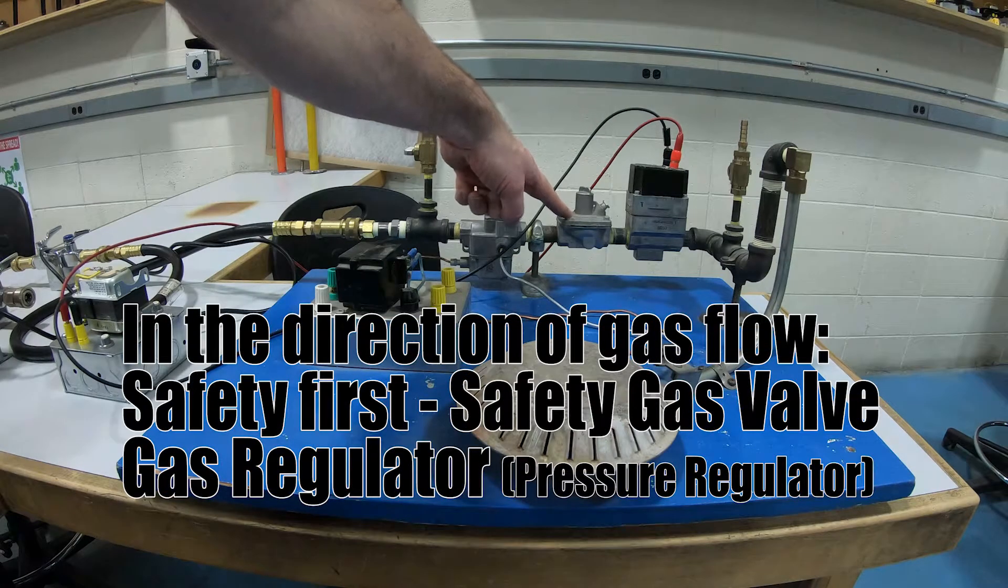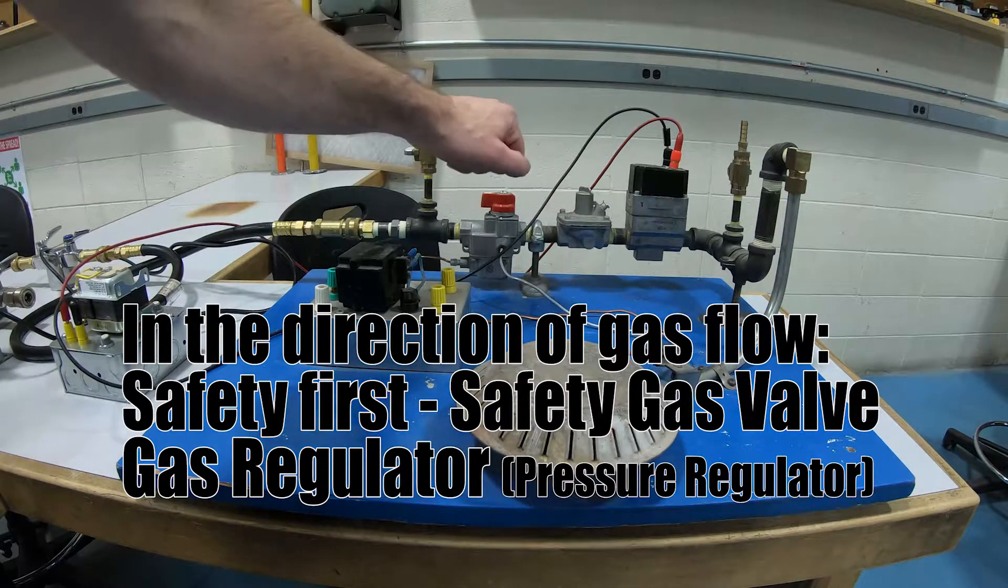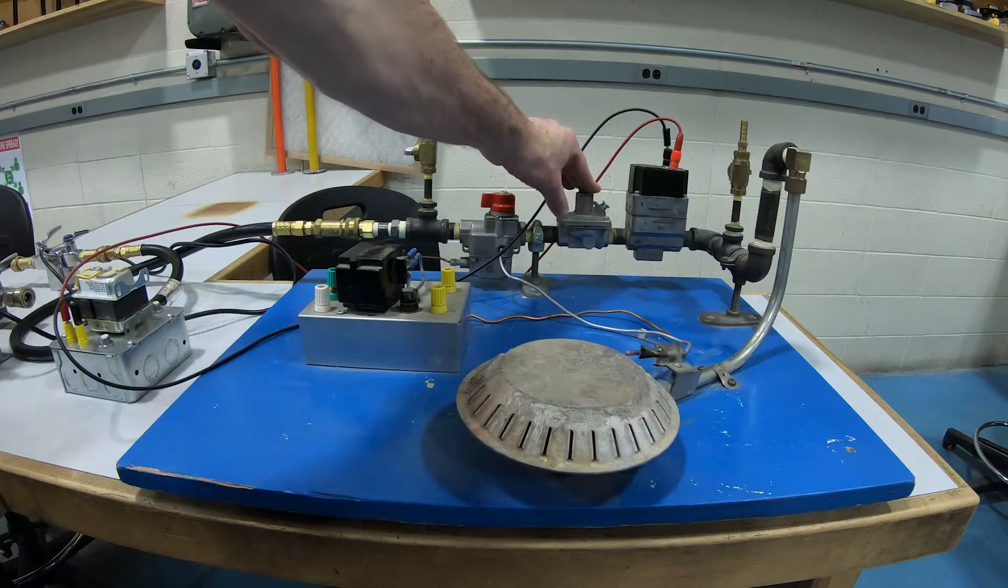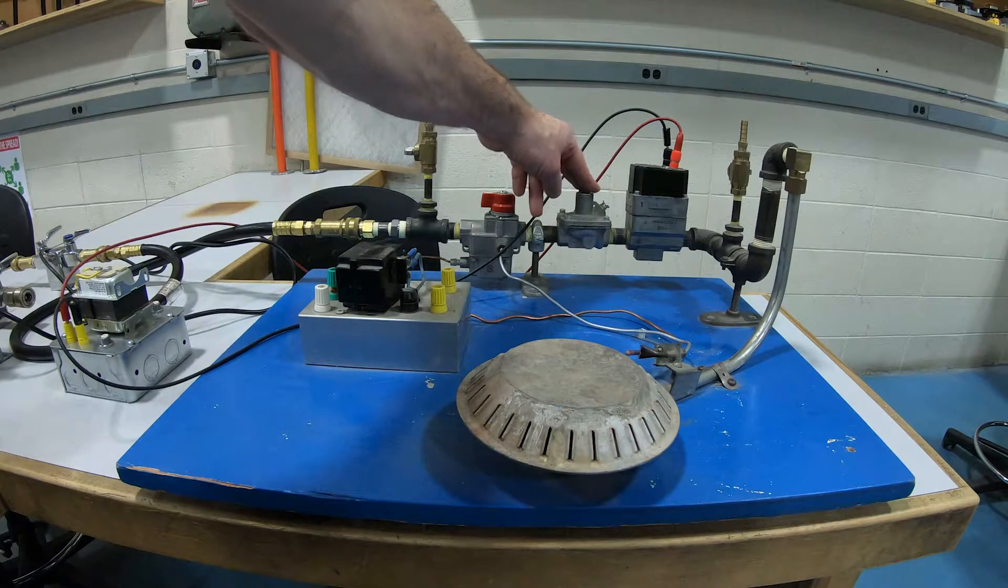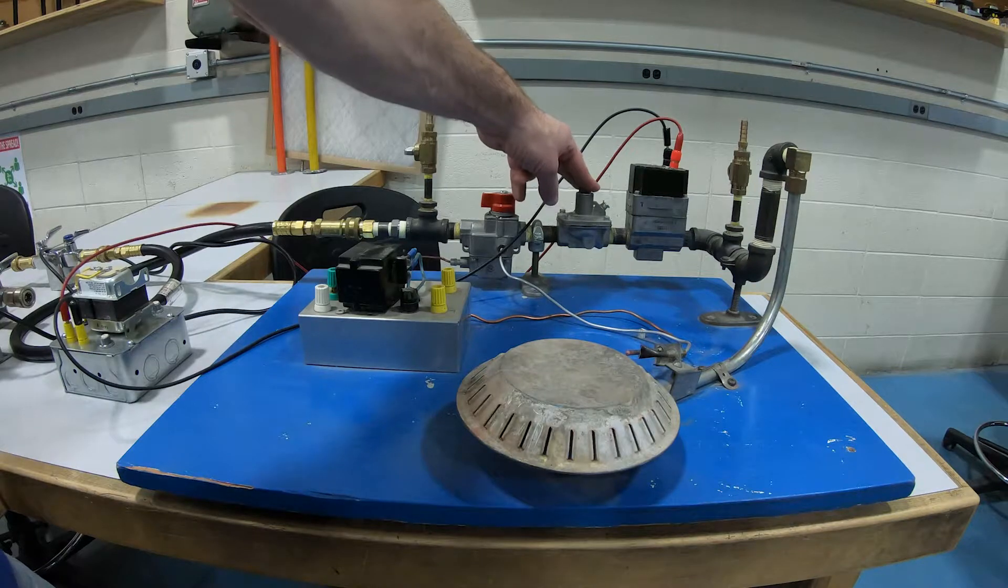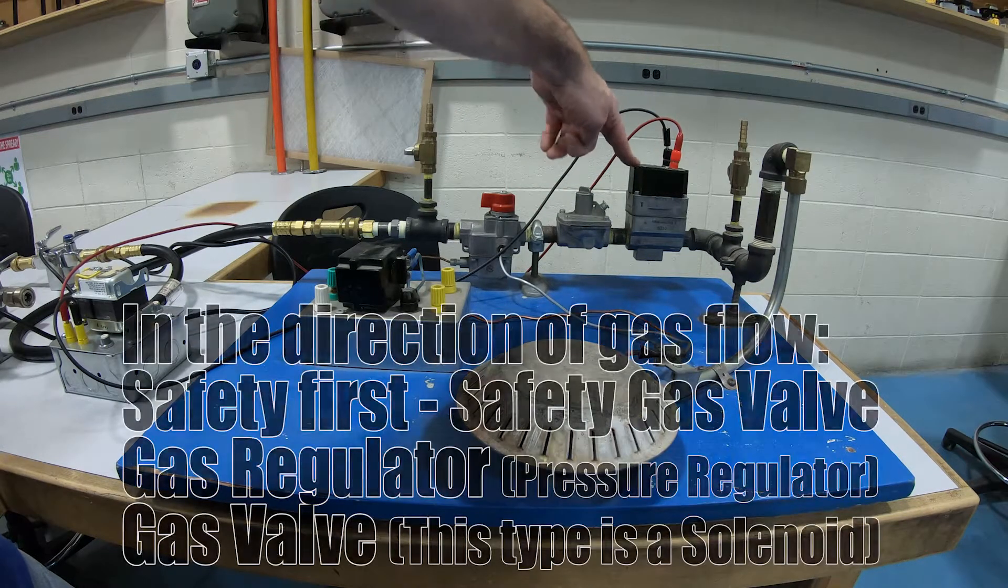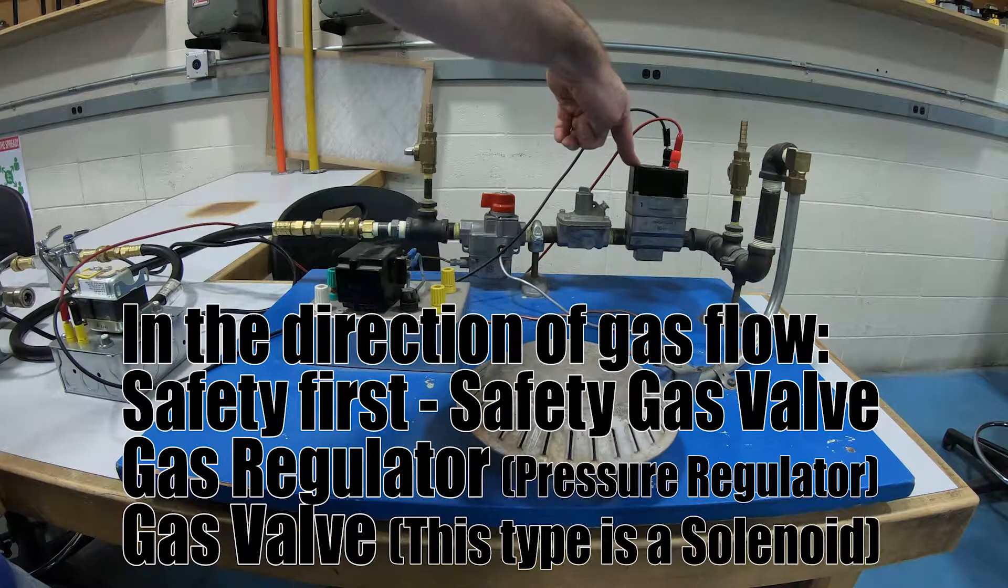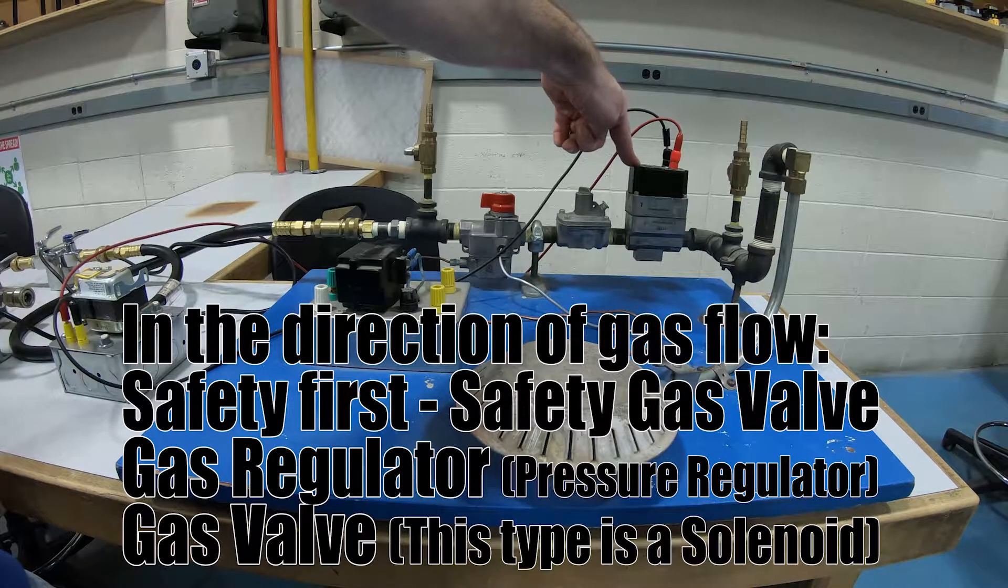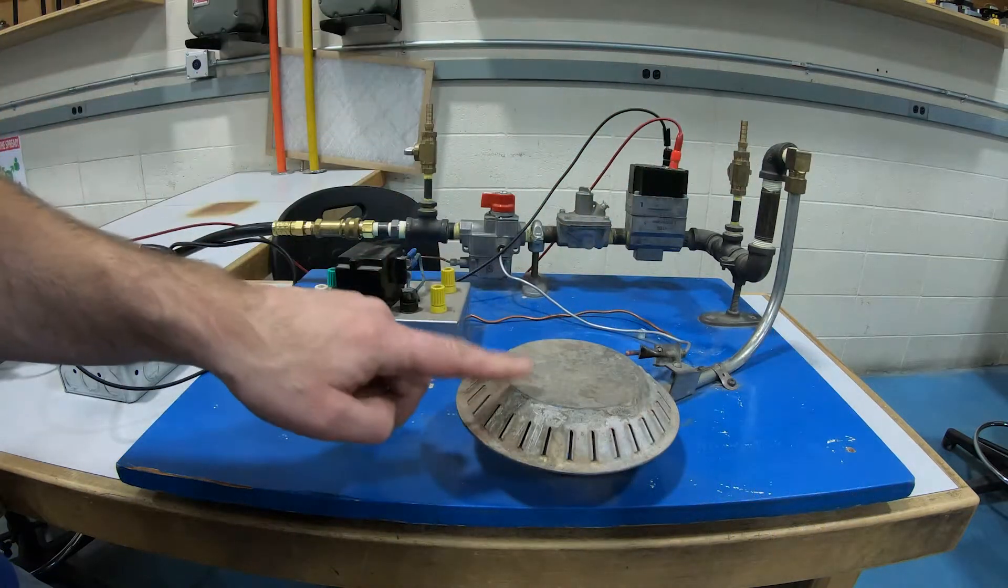The next device is the regulator. The regulator will take the gas pressure down from about seven inches of water column to about 3.5. The next device is controlled by our thermostat. This is a solenoid gas valve and then we just go off to our burner.